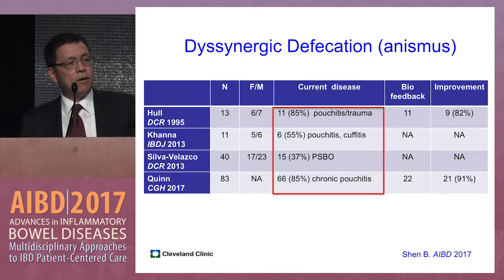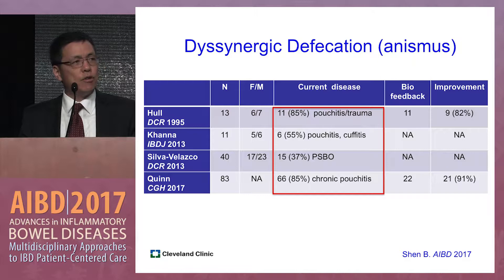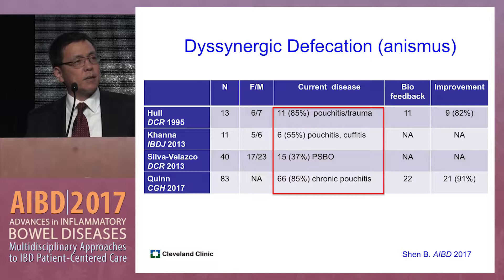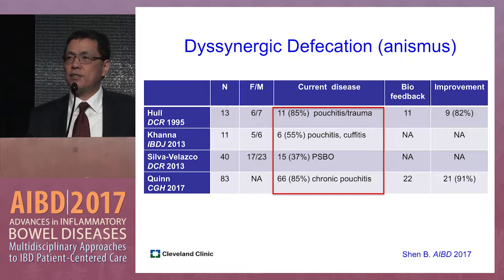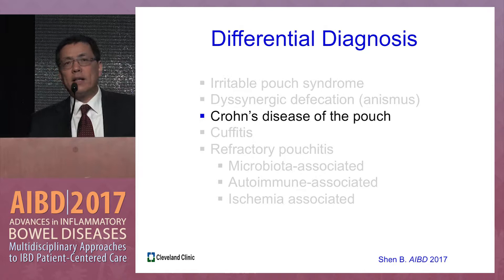In cases of refractory cuffitis or refractory pouchitis not responding to any medical therapy, you should look for a functional disorder. Four studies published on patients with anismus showed that the majority had concurrent cuffitis and pouchitis. If patients have refractory disease, you may want to try biofeedback therapy first, rather than antibiotic or suppository therapy.